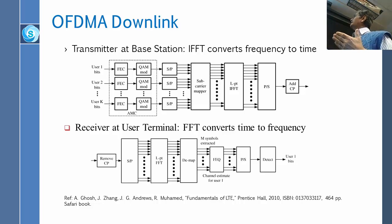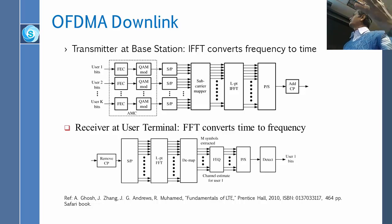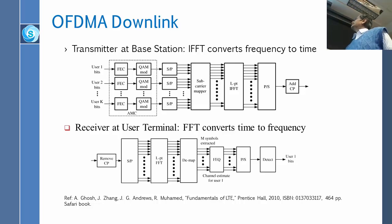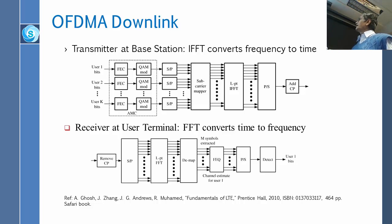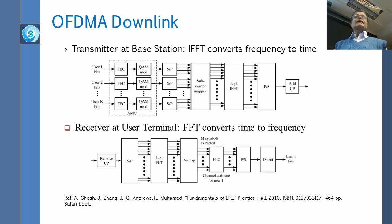Then we do an L-point IFFT — inverse fast Fourier transform — where L is whatever number of carriers you have. As a result, whatever comes out is converted parallel-to-serial. Now it looks like one waveform stream. We add the cyclic prefix and send it off on the air. Notice that everything starts as a serial stream and goes out as a serial stream, but in between we make things parallel, randomize them, and so on.